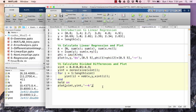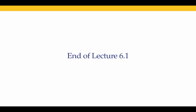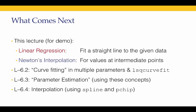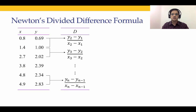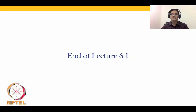To recap: in this lecture we talked about linear regression — fitting a straight line or curve to a given set of data. The example taken was fitting a straight line, but regression does not necessarily mean only fitting a straight line; that is something we will see in the next lecture. We used Newton's interpolation to find the value of y at intermediate points of x. In the next three lectures we will spend two lectures covering regression and parameter estimation and the last lecture covering interpolation. Thank you and bye.